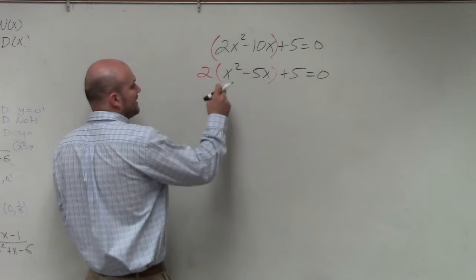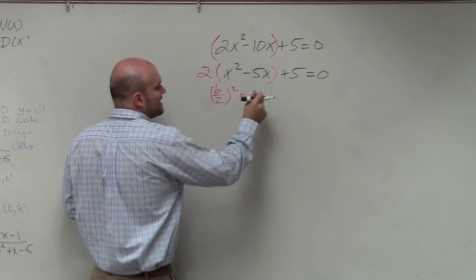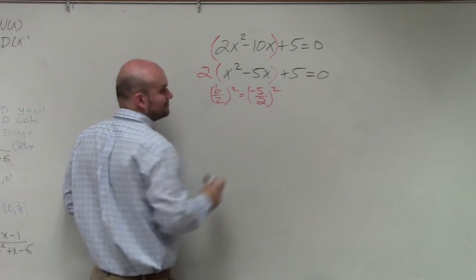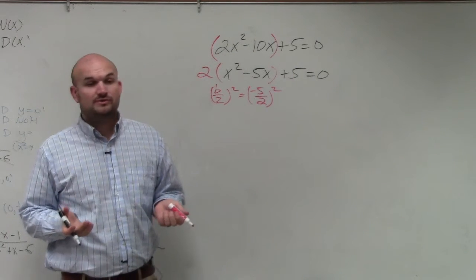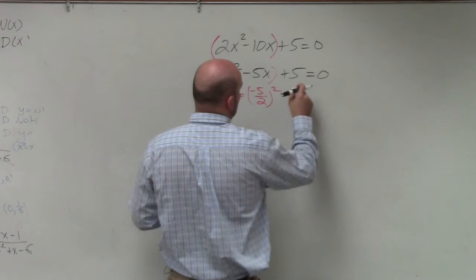Then we take our B divided by 2 and square it. And this is not going to be very fun, because again, it ends up being a fraction. But we're not going to convert it to a decimal. We're just going to leave it as is. And we see that it's 25 over 4.